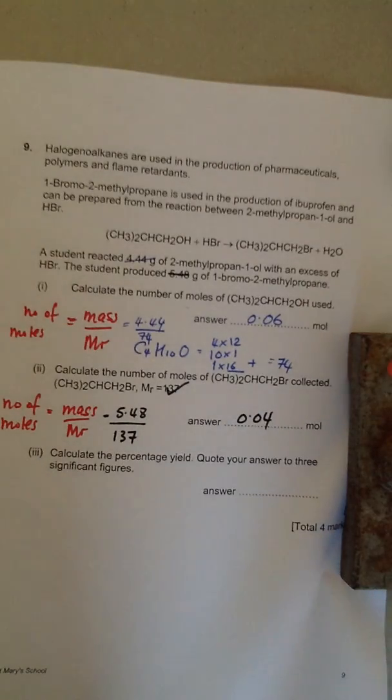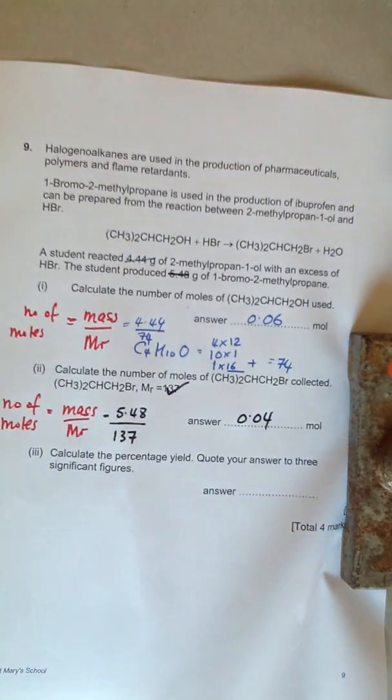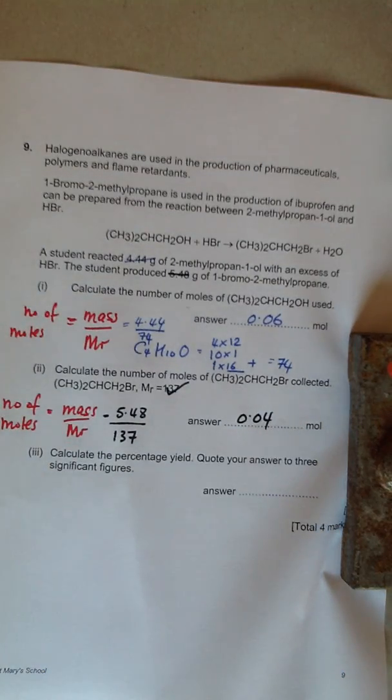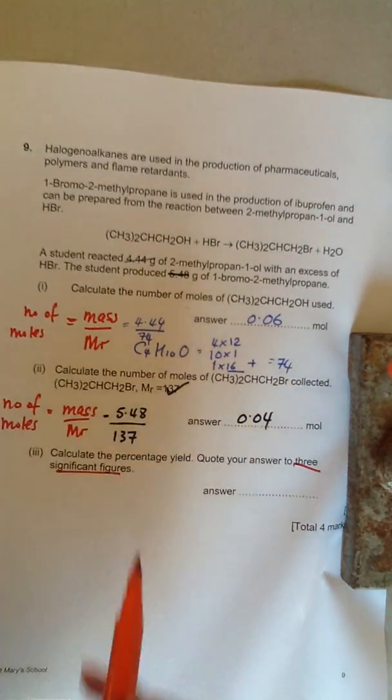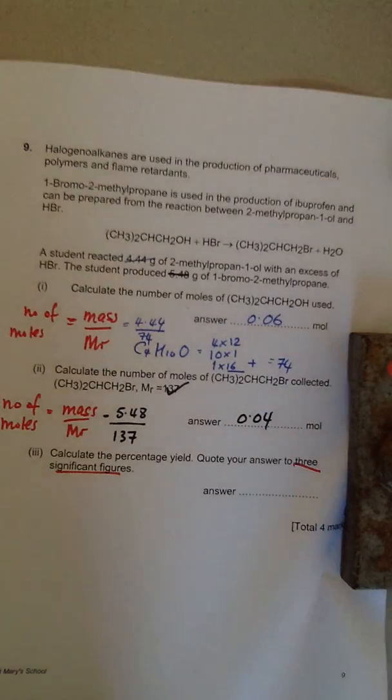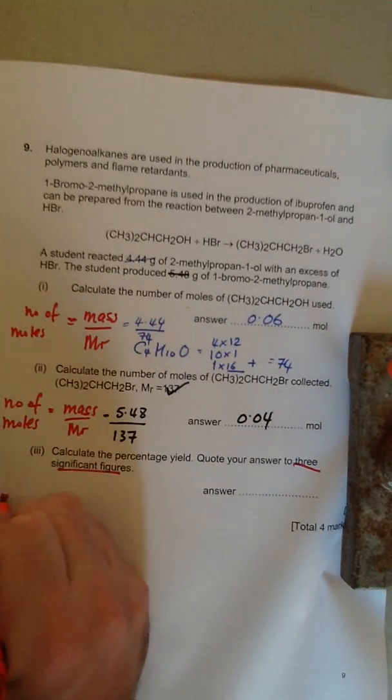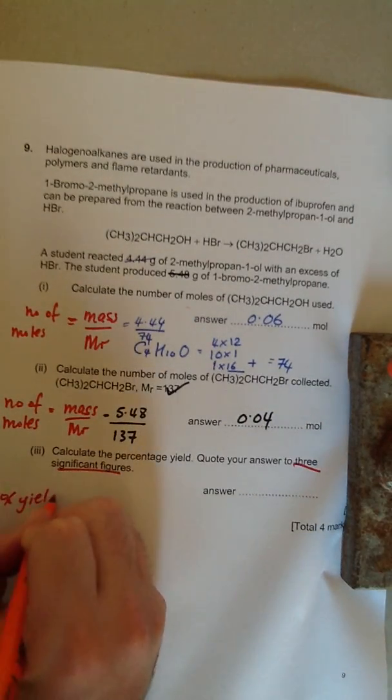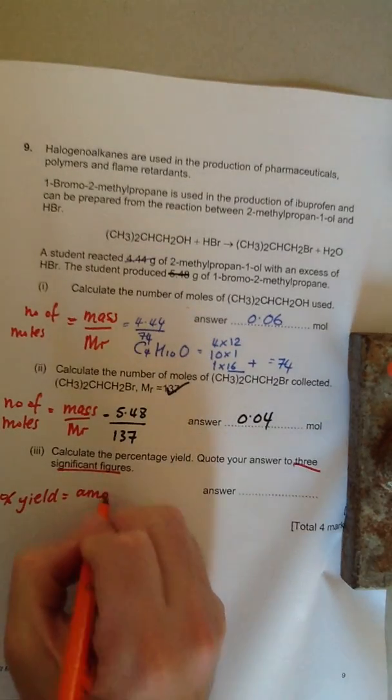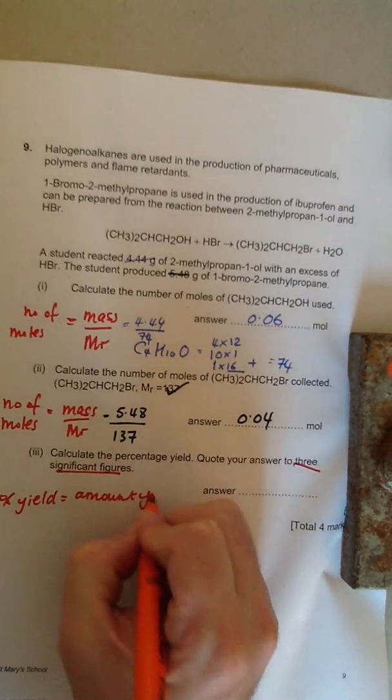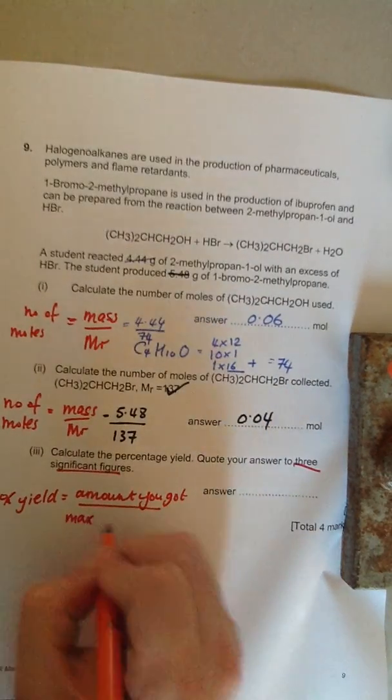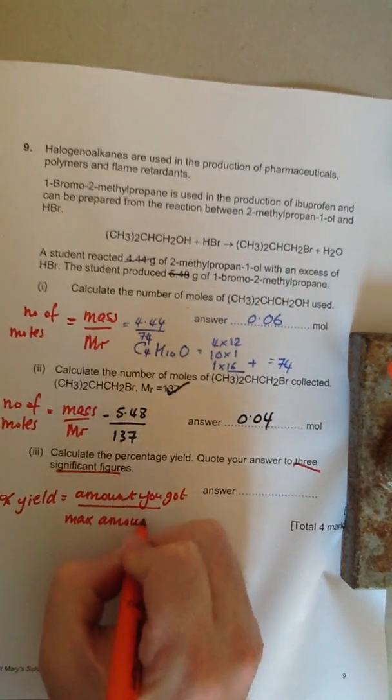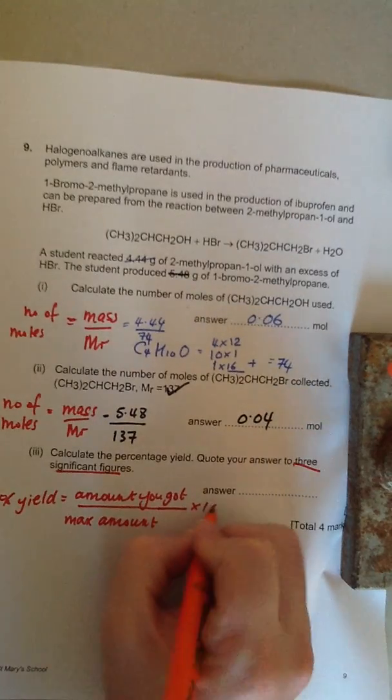It says calculate the percentage yield. Quote your answer to three significant figures. The important bit there is three sig figs. Two sig figs will not get you the mark. So how are we going to do this? Percentage yield is worked out by the amount you got divided by the max amount you could have got, times by 100.